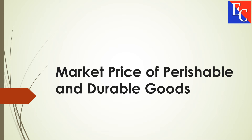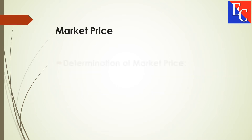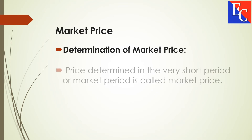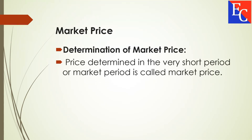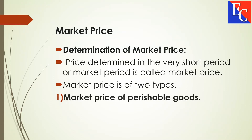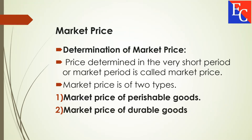Market Price of Perishable and Durable Goods. The price determined in a very short period or market period is called the market price. Market price is of two types: (1) Market Price of Perishable Goods, and (2) Market Price of Durable Goods.